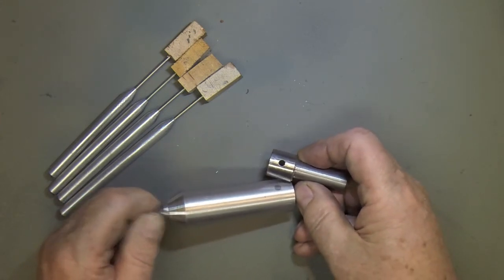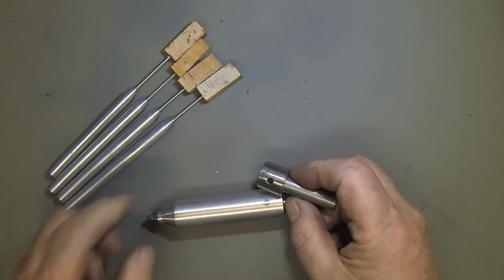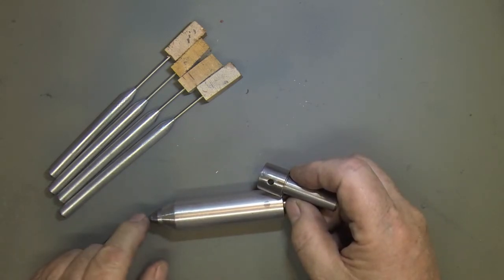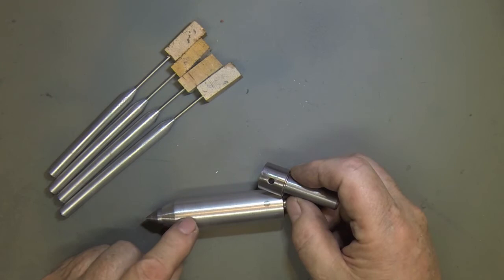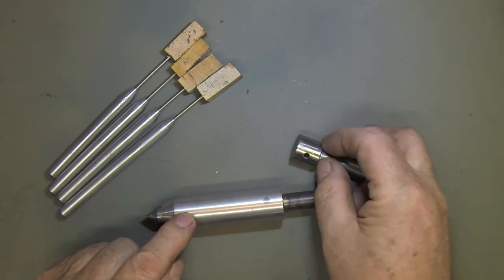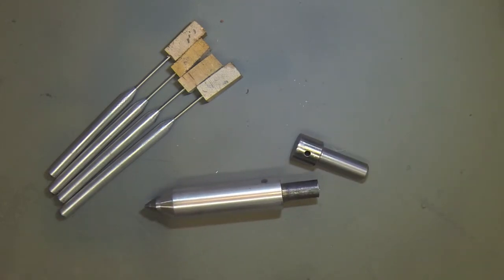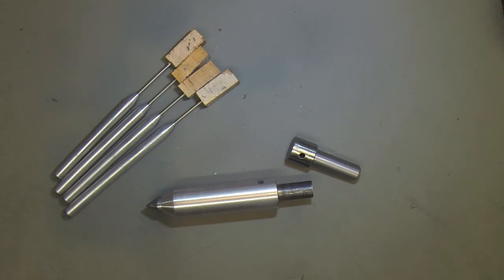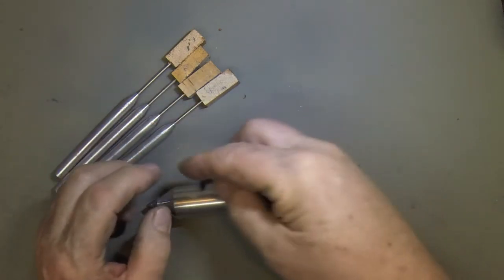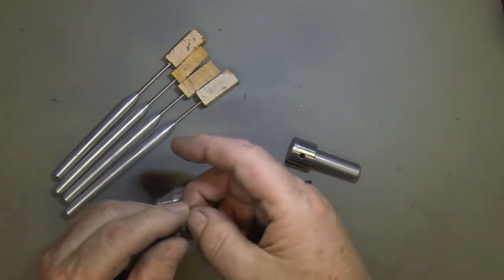The tool steel part, the business end of it, has a little e-clip like this that goes across the tool steel.